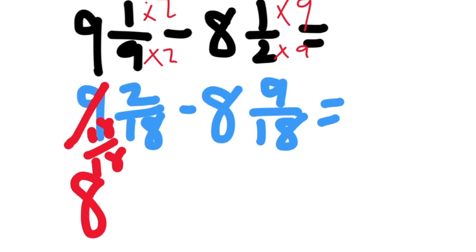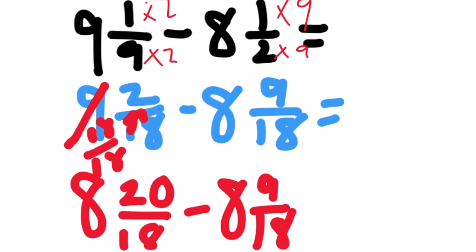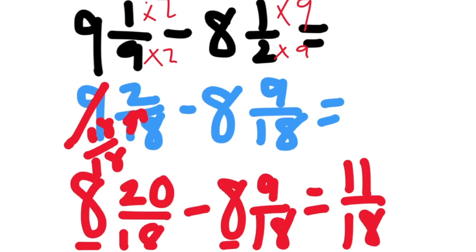And then let's just add that right away onto the 2 eighteenths. So we have 8 and 20 eighteenths minus 8 and 9 eighteenths. 8 minus 8 is 0, so there's no whole number. And then 20 eighteenths minus 9 eighteenths is 11 eighteenths.